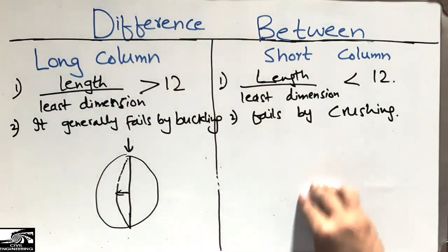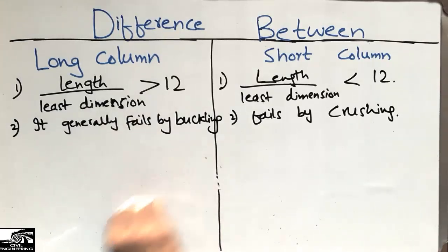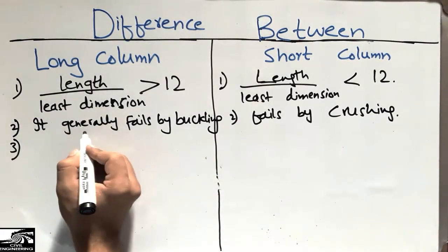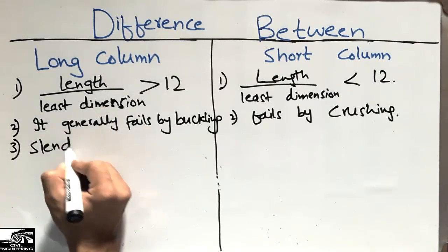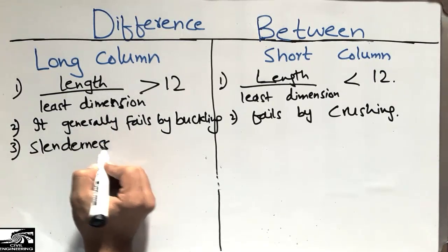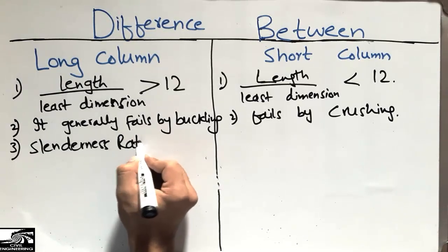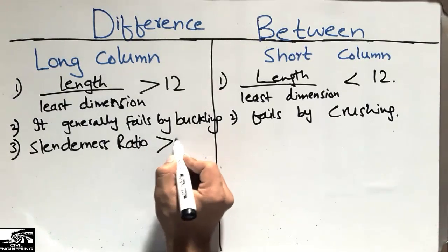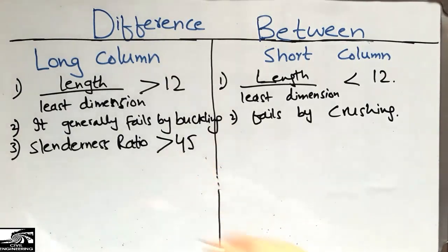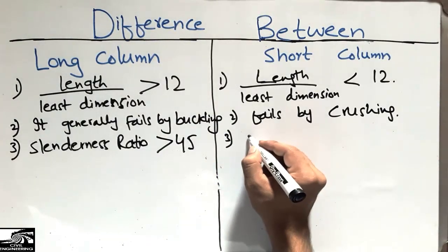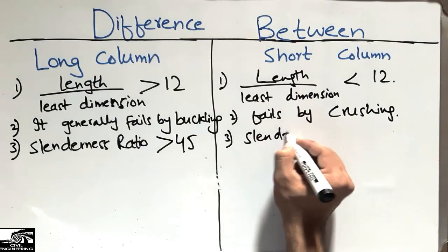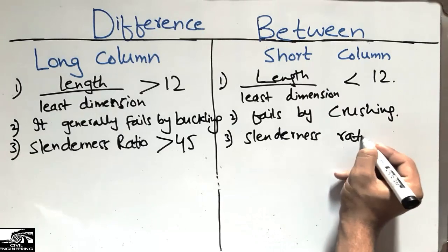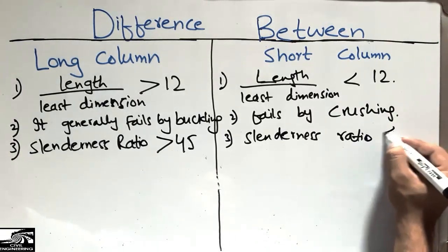The third difference is the slenderness ratio. The slenderness ratio of a long column is always greater than 45, while the slenderness ratio of a short column is always less than 45.